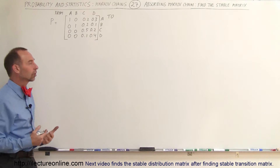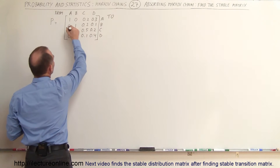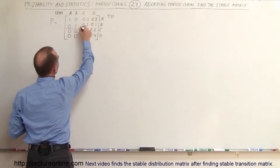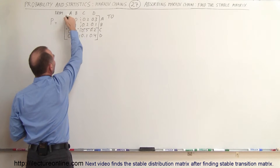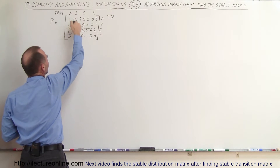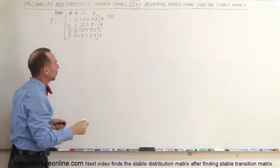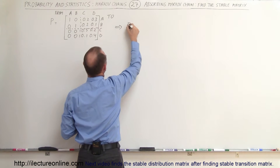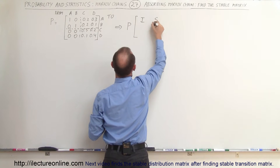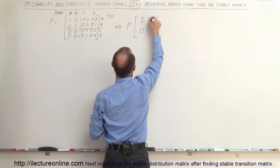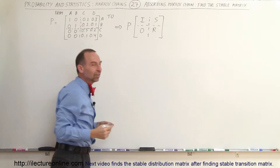So what does the stable matrix look like? We have a situation where you want to subdivide the matrix in such a way that you separate the portion where you have the ones, and that becomes the identity matrix. This gives us the S matrix, the R matrix, and the zero matrix. So the transition matrix looks like this: we have the I, the S, the zero, and the R portions of the matrix, and in themselves they are really matrices as well.